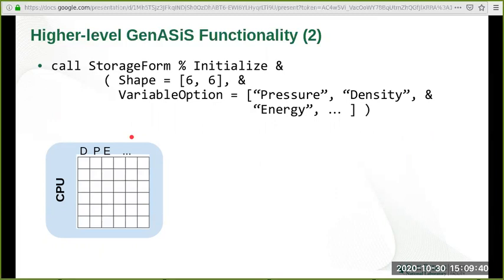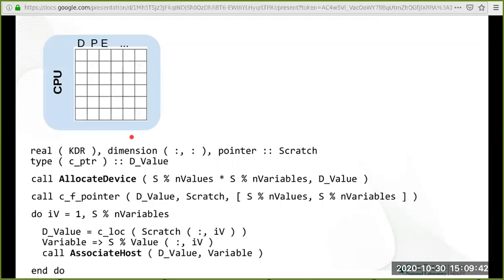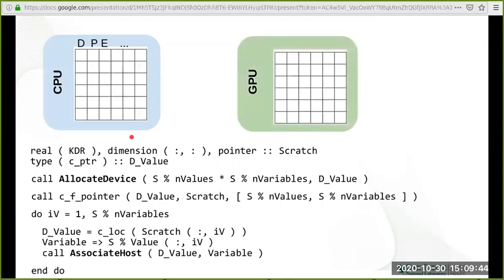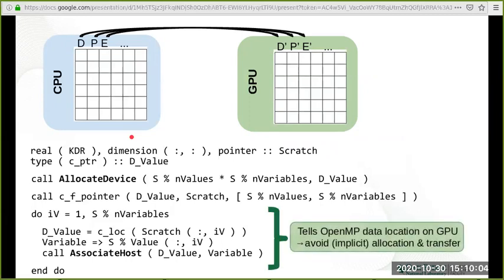When we call the allocate-device method, a mirror allocation is created on the GPU memory with the corresponding total size. However, host-to-device association is made per variable, that is column-wise. In this case, there is a separate association for each variable such as density, pressure, and energy. The bits of code on this slide illustrate how these associations are made.